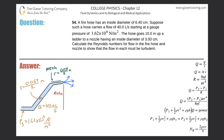Number 54. A fire hose has an inside diameter of 6.4 centimeters. Suppose such a hose carries a flow of 40 liters per second starting at a gauge pressure of 1.62 times 10 to the 6 newtons per square meter. The hose goes 10 meters up a ladder to a nozzle having an inside diameter of 3 centimeters. Calculate the Reynolds numbers for flow in the fire hose and nozzle to show that the flow in each must be turbulent.